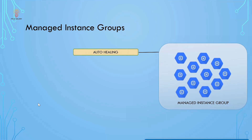It also provides auto-healing. You can set up an application-based health check, which periodically verifies if the application is responding as expected on each of the Managed Instance Group instances. If an application is not responding on a VM, the MIG automatically recreates the VM.